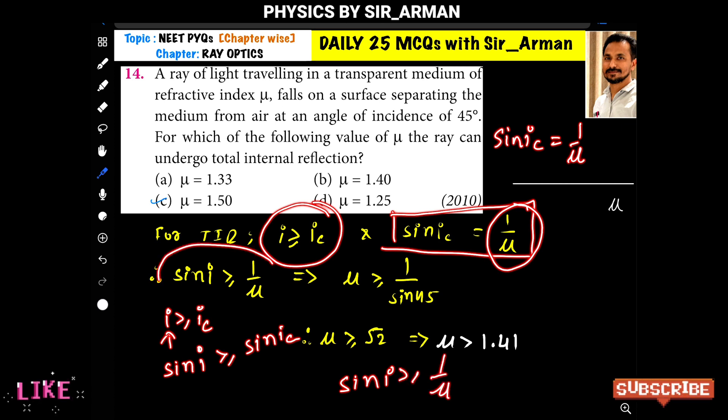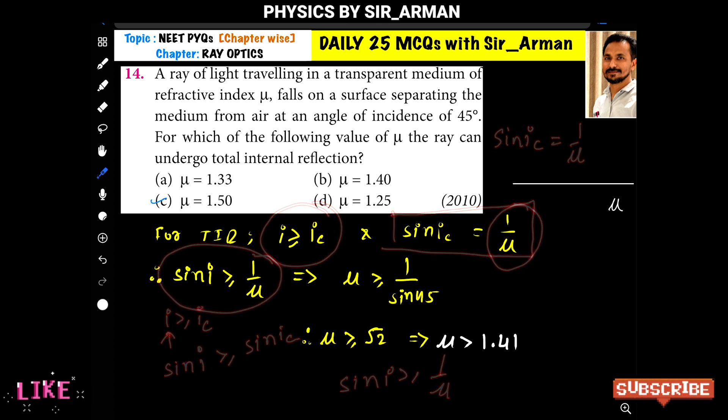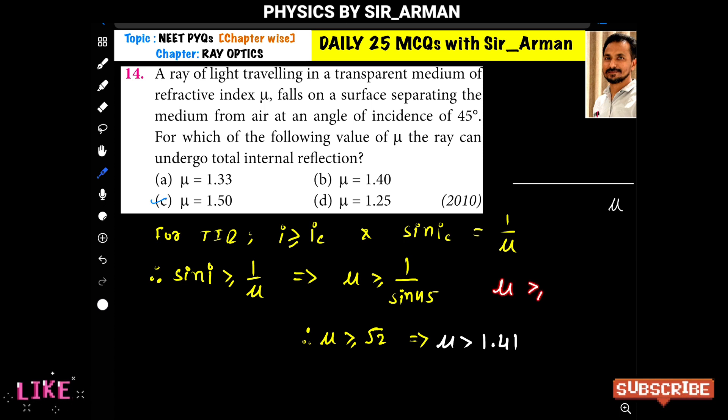Now making μ the subject, μ is greater than or equal to 1 upon sin i. Here i is given as 45, so sin 45 is 1 by root 2. We can write μ is greater than or equal to 1 divided by 1 upon root 2. This root 2 will go up, so μ is greater than or equal to root 2.